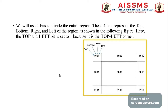The Cohen-Sutherland algorithm is totally based on four bits to divide the entire region. These four bits represent the top, bottom, left, and right of the region. The region is divided into nine parts: 0000 is the clipping window itself, and the surrounding regions have codes such as 1001, 1000, 1010, 0001, 0010, 0101, 0100, 0110. The top-left bit is set to 1 because it is the top-left corner, and 00 bits are for the bottom and right in the Cohen-Sutherland algorithm.